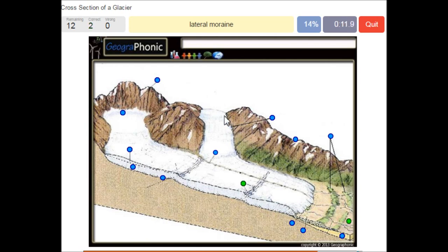Lateral moraine. This is a lateral moraine. A cirque is this area. It's called a cirque. Snow and firn. Accumulation is above this line here.